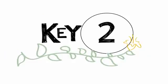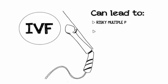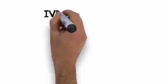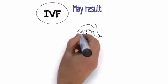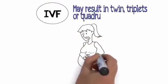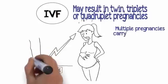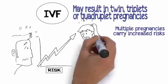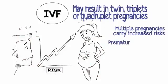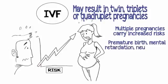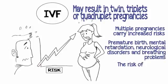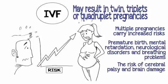Key number two: In vitro fertilization can lead to risky multiple pregnancies and baby brain damage. Many IVF treatments result in twin, triplet, and even quadruplet pregnancies. Multiple pregnancy carries an increased risk including premature birth, mental retardation, neurological disorders, and breathing problems. The risk of cerebral palsy and brain damage in the babies is increased ninefold.